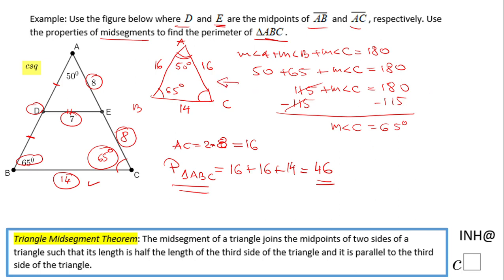This problem is doable because we recognized this is an isosceles triangle. If you enjoyed this video, don't forget to click the like button and come back to C-square for more help. Thank you.